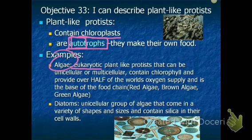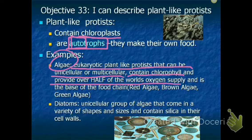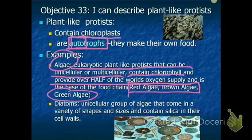Algae is a eukaryotic plant-like protist that can be unicellular or multicellular. They contain chlorophyll, can make their own food, and provide over half of the world's oxygen supply — they are the base of the food chain. Green algae is most familiar, but red and brown algae, which you know as seaweed, are also plant-like protists. If you've ever seen seaweed wash up on the beach, that is a type of protist.